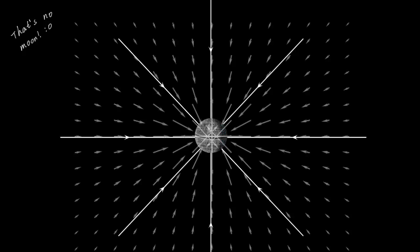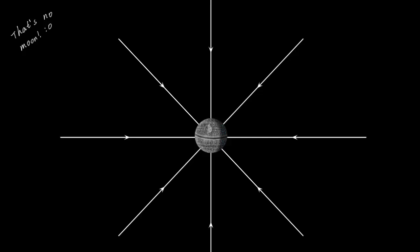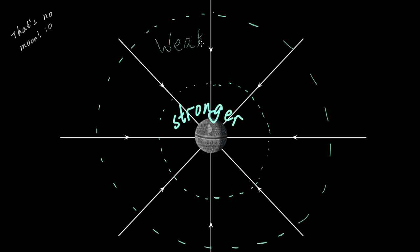These lines come from joining together the vectors in such a way that the vectors are tangent to the line at every point. The direction of lines tells us the direction of the gravitational field, while the density of lines tells us the strength of the field. The more dense the lines are, the stronger the field, and vice versa.